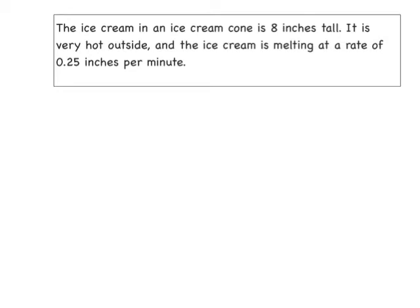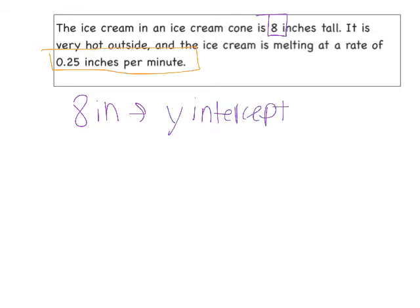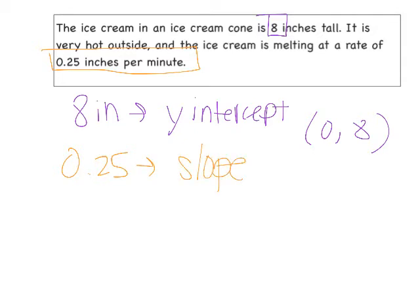The ice cream in an ice cream cone is eight inches tall. It is very hot outside and the ice cream is melting at a rate of 0.25 inches per minute. So we've got this eight inches that we're starting with — that's our constant, that's our y-intercept. It's our starting value at the beginning before the time starts; when you first get that ice cream cone, it's eight inches tall. So at a time of zero, we have eight inches. And then that 0.25 is our slope — that's our rate of change, that's how it's changing every minute. Is that going to be increasing or decreasing? What would slope dude say? Nice negative — it's going to be going down, we're melting. So we're going to be losing 0.25 inches per minute.